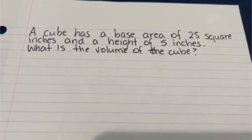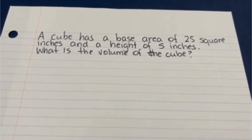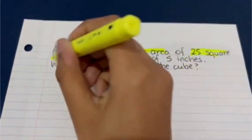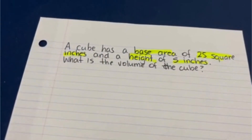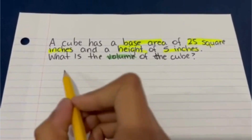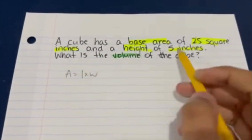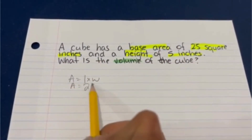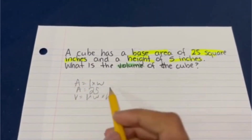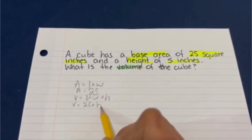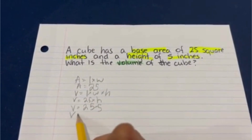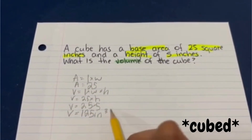A cube has a base area of 25 square inches and a height of five inches. What is the volume of the cube? Right off the bat, we know that the base area is 25 square inches and the height is five inches. We are looking for the volume. We know that area equals length times width, and the base area is 25 already. Since volume equals length times width times height, and area is already length times width, volume equals 25 — the area — times the height of five. So, volume equals 25 times five, meaning that volume equals 125 cubic inches.